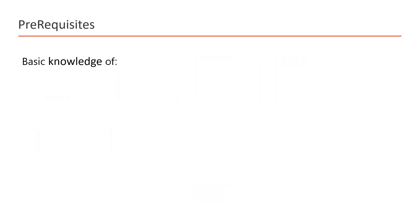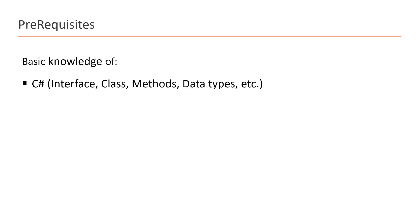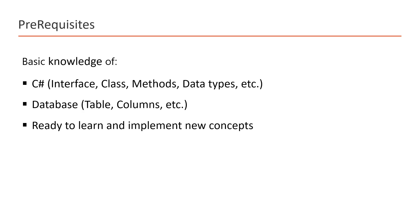To start this course, you only need basic knowledge of C#, such as interfaces, classes, methods, data types, etc. It would be very helpful if you have some basic knowledge of databases, like what tables and columns are. The most important prerequisite is that you must be ready to learn and implement new concepts. Other than this, no knowledge of ASP.NET Core or Entity Framework Core is required — we will cover everything from scratch.